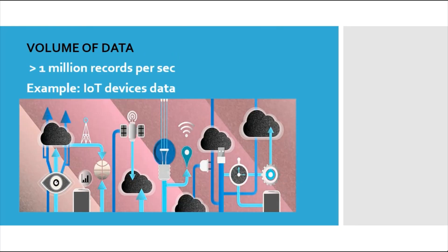The second characteristic is volume of data. There are devices which generate data in big volumes every second — in petabytes, with potentially millions of records per second. IoT devices embedded in vehicles, satellites, and GPS devices generate huge amounts of data per second. This data is used to track the location of a vehicle or satellite, know the speed of the vehicle, and sometimes obtain weather information of the location where the vehicle is moving.